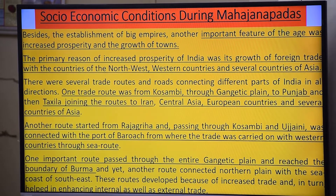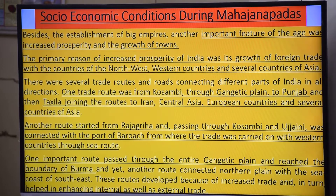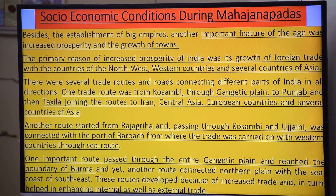To recap: from Rajgir to Kosambi, Kosambi to Avanti and Ujjain, then to Bharuch on the Arabian Sea. Another important route passed through the entire Gangetic Plain and reached the boundary of Burma to the east. These trade routes explain why the Magadha Empire kept growing.